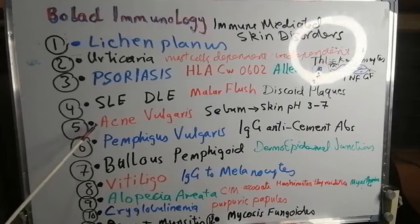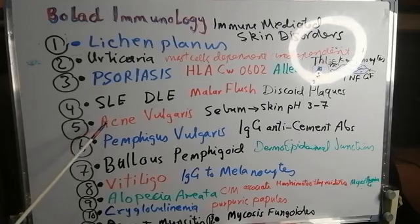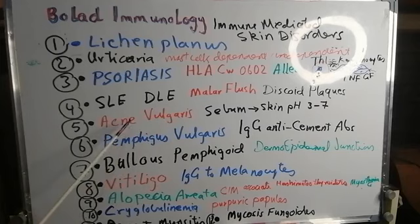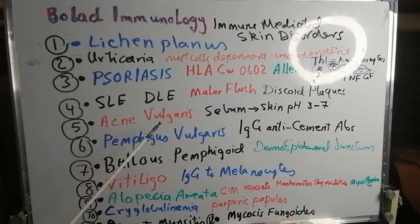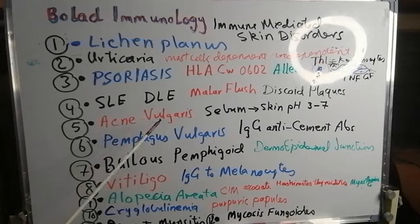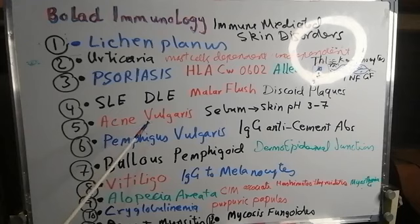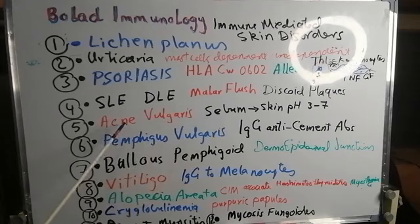Another example of an immune-mediated skin disorder is acne vulgaris. As the pH of the skin is between 3 and 5, this does not normally allow microorganisms to grow on the skin. However, in some instances, some bacteria may feed on sebum and this leads to acne vulgaris.